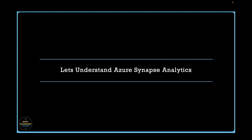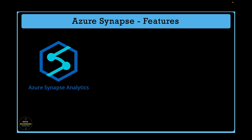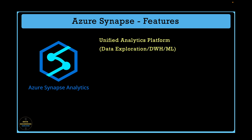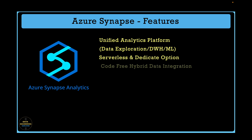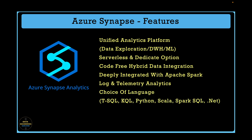Azure ADF and Azure Synapse both have the same data integration engine under the hood. Microsoft sells this platform as a Unified Analytics Platform, as it can perform data exploration, data warehousing, big data analytics, and machine learning tasks. Its features include serverless and dedicated options, code-free hybrid data integration, deep Apache Spark integration, log and telemetry analytics, and support for T-SQL, K-SQL, Python, Scala, Spark SQL, and .NET.